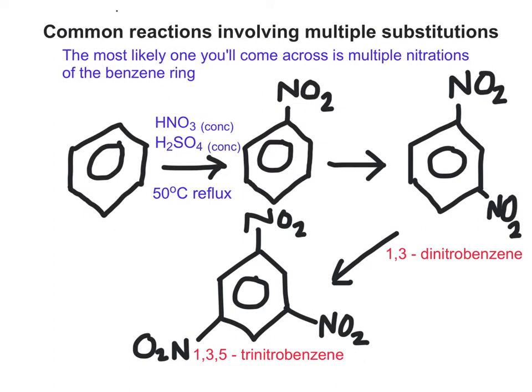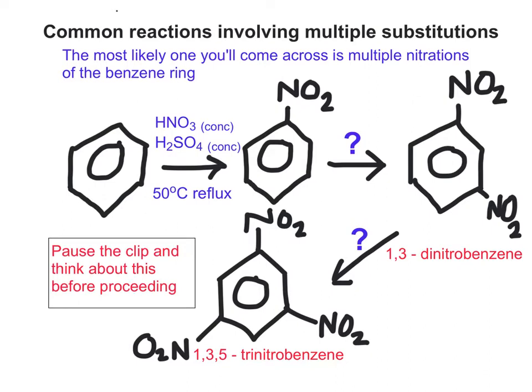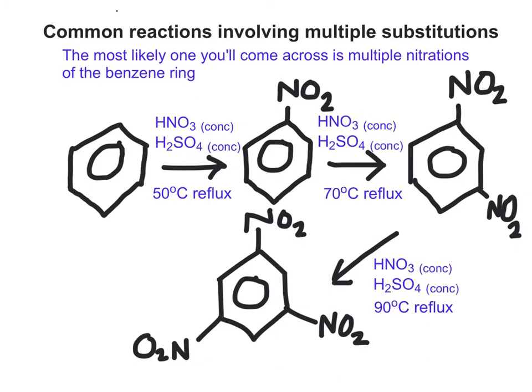For further nitration, you're undergoing exactly the same reaction as before but you want more of it to happen on the same benzene ring. It's the same reagents, but the conditions get hotter and hotter - the more you heat it, the more nitrations you get. What's interesting is the position of the nitrations: why do they go on to those positions and not the other ones? That's what the next part of the clip is about.